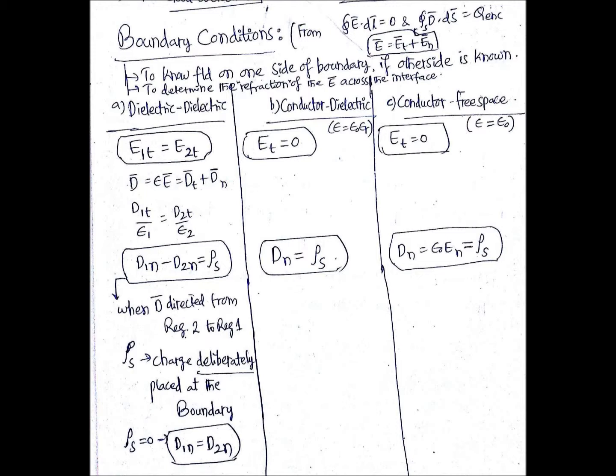So D1t/ε1 equals D2t/ε2 is the relation for tangential components. For the normal components of electric flux density, the condition is D1n minus D2n equals ρs — the difference between the normal components equals the surface charge density ρs.